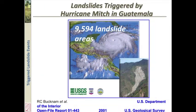In the third example, we have almost 10,000 landslides that resulted from heavy rain in the sidewalls of Hurricane Mitch. This was in Guatemala, and it resulted in a large amount of damage and devastation to the area.